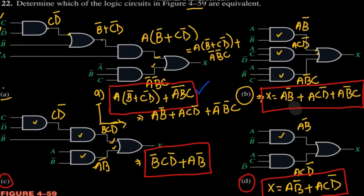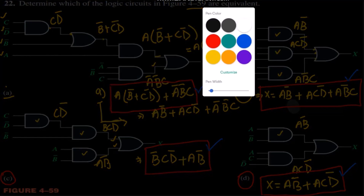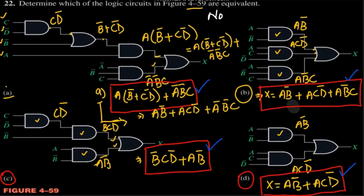Comparing all four parts — part A, part B, part C, and part D — we can clearly see that none of the expressions are equivalent. Therefore, none of these logic circuits are equivalent. That's the solution for this question. We've seen how to derive boolean expressions from logic circuits and compare them. See you in the next video — take care!